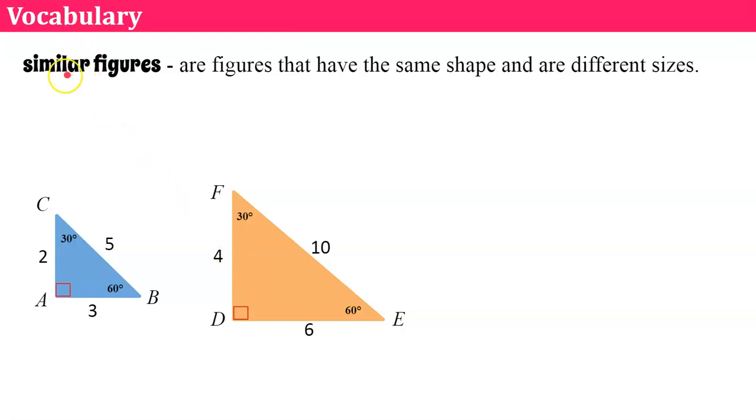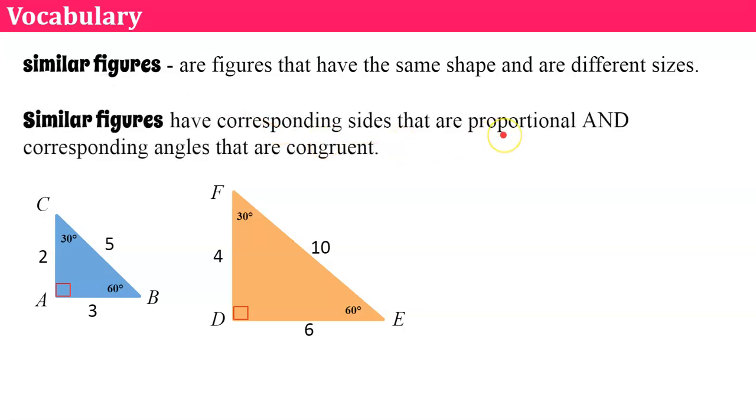Vocabulary. So we're talking about similar figures today. These are figures that have the same shape and are different sizes. We've learned about congruent figures earlier in this unit and congruent figures are exactly the same. Similar figures are different because their corresponding sides are proportional. Their corresponding angles are the same. They are congruent.